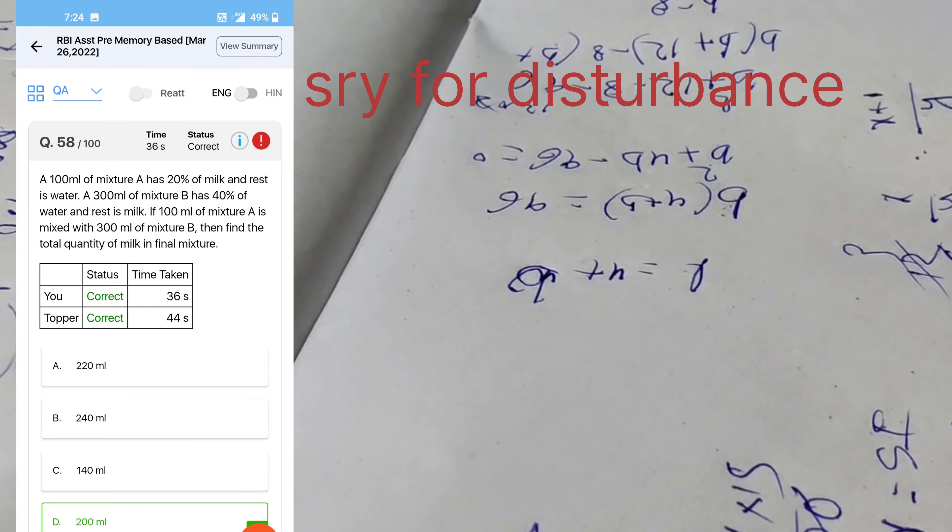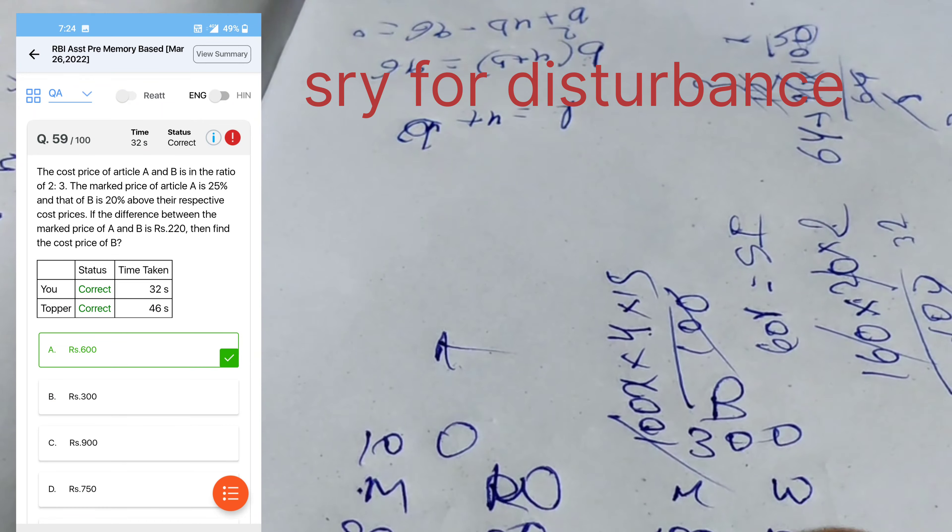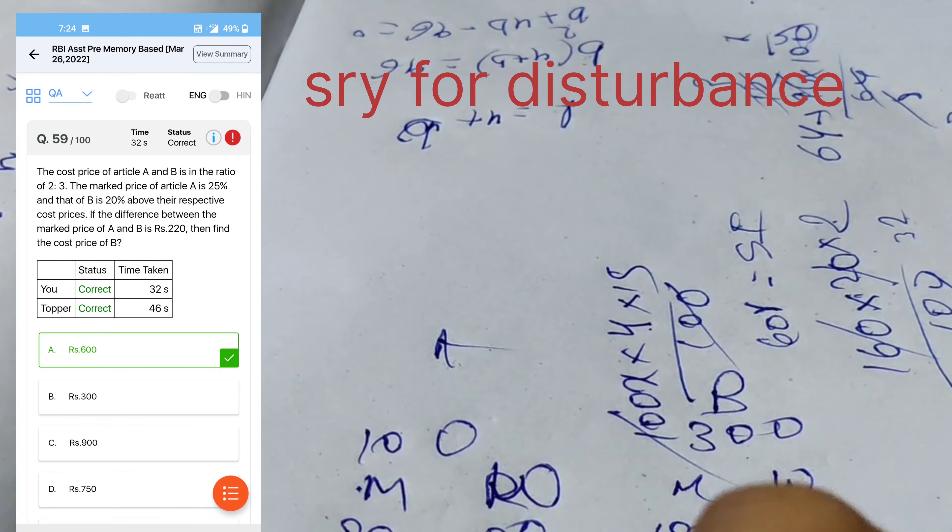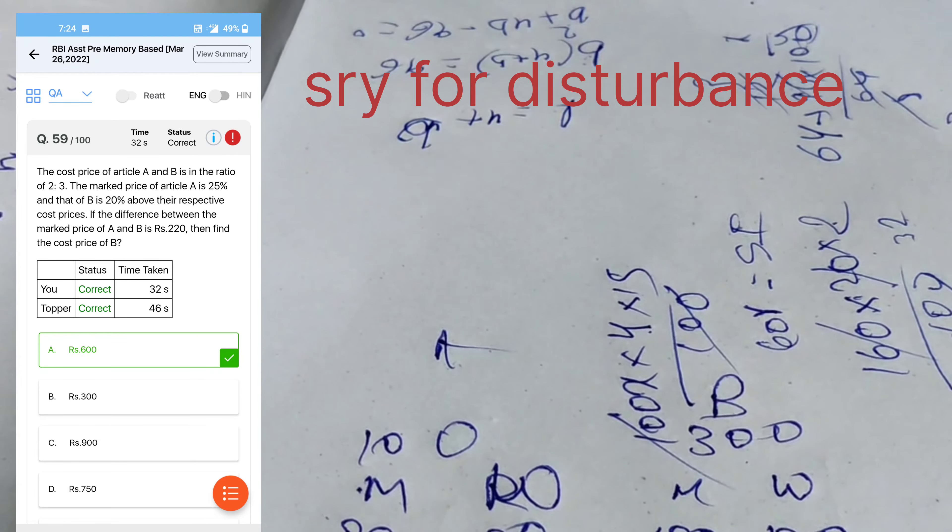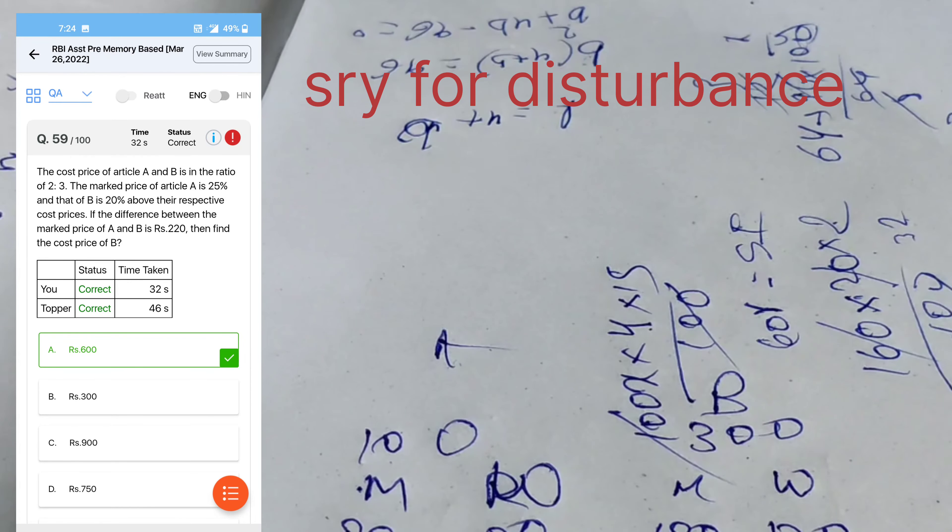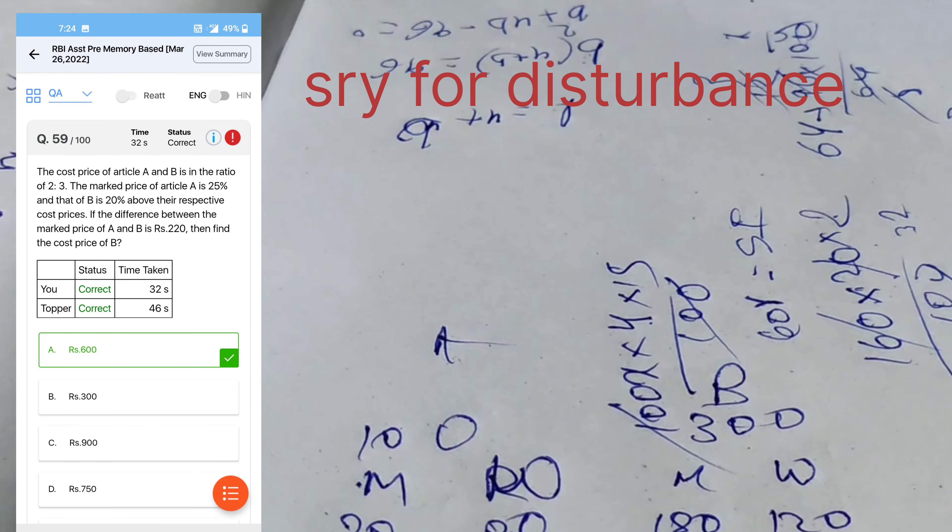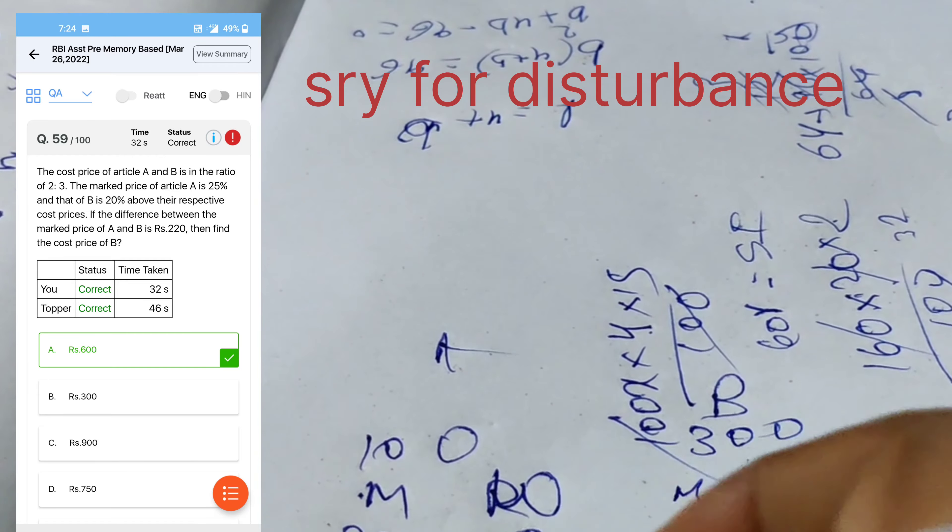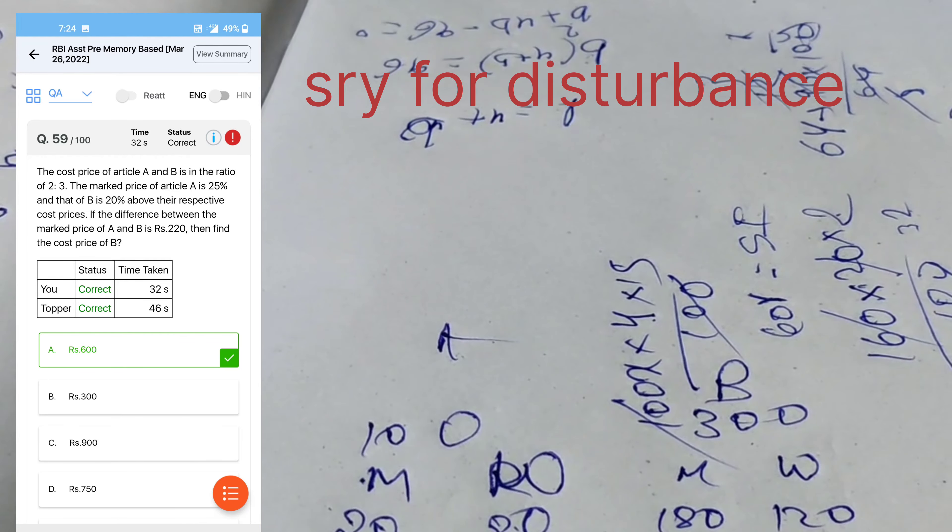Next, the cost price of article A and B is, for suppose, 200 and 300. Market price of A of article 25 percent more than cost price, 5 by 4, 250, 360. The difference between the market price, so 250 means 110 is 220 times 2. Find the cost price of 300 into 2 at 600.